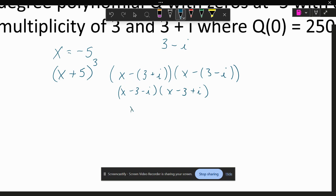I'm going to distribute the first one here. I've got x squared minus three x plus xi. Distribute the middle. I get negative three x plus nine minus three i.